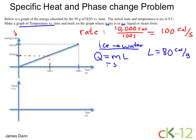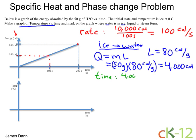Let's plug in the numbers. We have 50 grams of water, and that's times 80 calories per gram. And that equals 4,000 calories. Since the rate is 100 calories per second, we can see that the time to do that phase change will be 4,000 calories divided by 100 calories per second, and that equals 400 seconds.